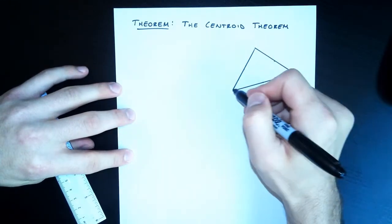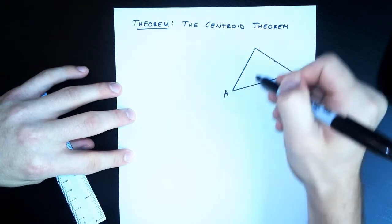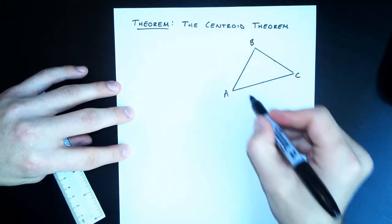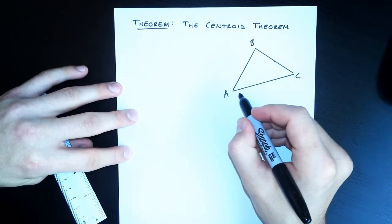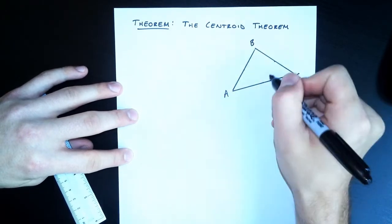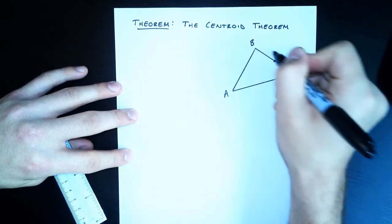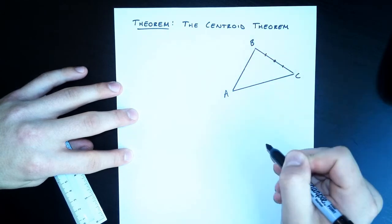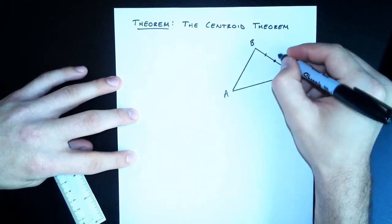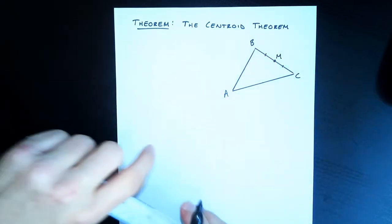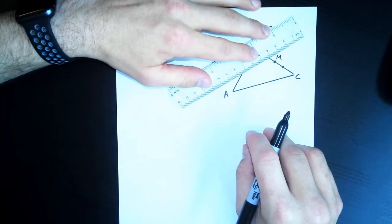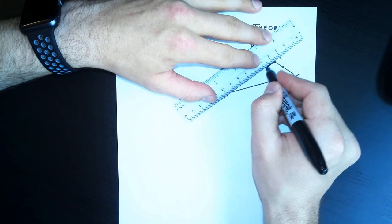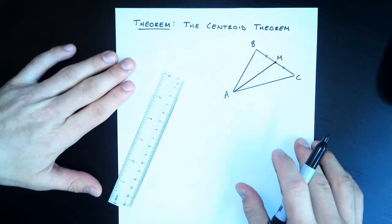A median is the segment that goes from the vertex of a triangle to the midpoint of the opposite side. So here I've drawn a triangle, and let's label this triangle ABC. A median goes from one of the vertices to the midpoint of the opposite side. Since it's the midpoint, we know that it splits it directly into two congruent segments. Let's call this midpoint point M. And if I connect those together, from the vertex to the midpoint of the opposite side, this is one of the medians of the triangle.